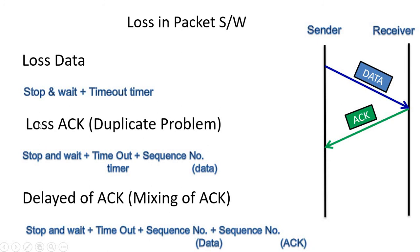In loss of ACK: the sender sends data, the receiver receives it and sends an acknowledgement, but the acknowledgement signal is corrupted in the channel. The sender doesn't receive it and thinks the data was not delivered, so after the timeout timer completes, it sends the data again. But there was no loss of data — only loss of acknowledgement. So the receiver now has two identical packets; the second packet is a duplicate. This is the problem caused by loss of acknowledgement.